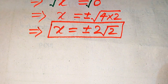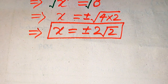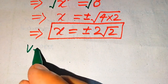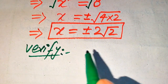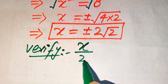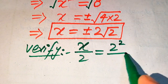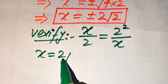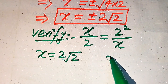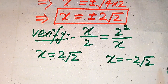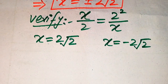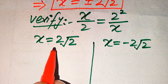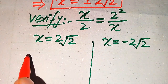In the next step we will verify whether both of these roots are solutions of the given equation or which root is an extraneous root. For verification we copy down the given equation: x divided by 2 equals 2 squared divided by x. On the left side we will verify the positive value x equals 2 times the square root of 2, and on the right side we will verify the negative value x equals negative 2 times the square root of 2.